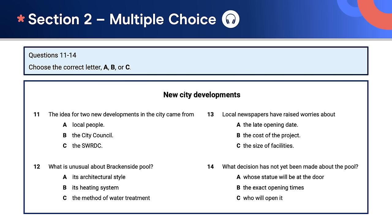Here we have two questions with five answer options for each one. Read the instructions: choose two letters A to E. The first question is a bit easier — you need to identify two hobbies. But look at the second question: what are the two reasons why Heyerdahl went to live on the island? This question is testing your ability to understand cause and effect — the effect is that Heyerdahl goes to the island; what caused this? What are the reasons?